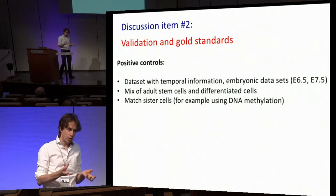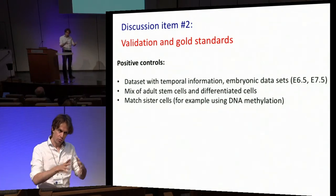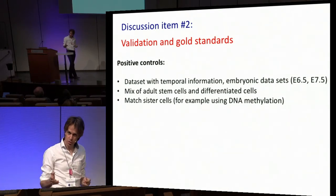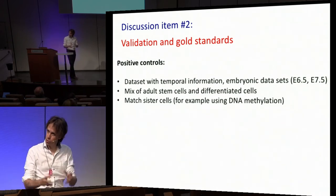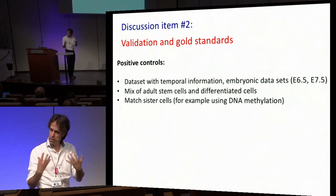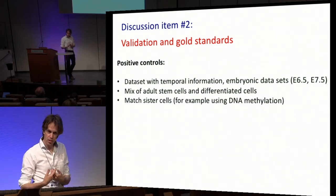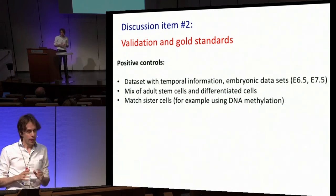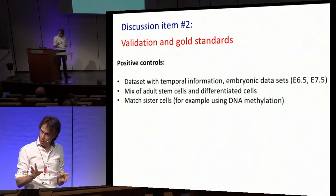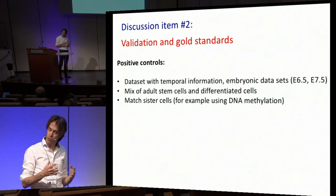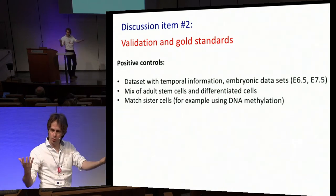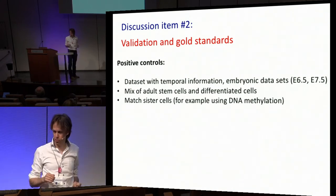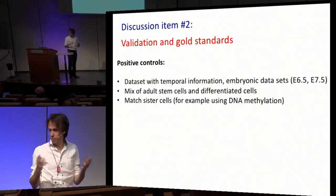There are some methods to actually identify sister cells. From other methods like methylation — completely independent measurements — you know that two cells are sisters. The caveat is it doesn't have to make sense in the transcriptome because there might be a completely asymmetric division where these cells are in completely different transcriptional states. It might be sisters but very different.